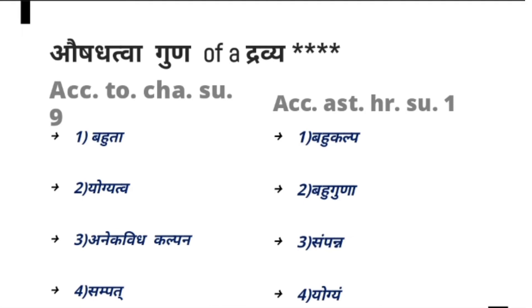According to Charaka Sutrasthana 9th chapter, what qualities should an Aushada possess for treatment? 'Bahuta Tatra Yogyatvam Aneka Vidakalpana Sampacheti Chatushko Ayam Dravyanam Gunasangraha' — Dravya should possess four qualities: Bahuta, Yogyatva, Aneka Vidakalpana, and Sampat. Bahuta means it should be available abundantly and easily. Yogyatva means it should be juvenile, healthy, and free from moisture and infestation.